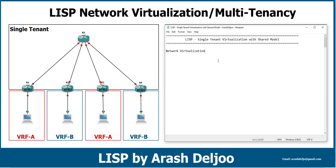For example, regarding network virtualization in switching networks — in layer 2 networks — we can remember that we had two switches: Switch 1 connected to Switch 2. Here, we configured the interfaces between Switch 1 and Switch 2 as a trunk interface.